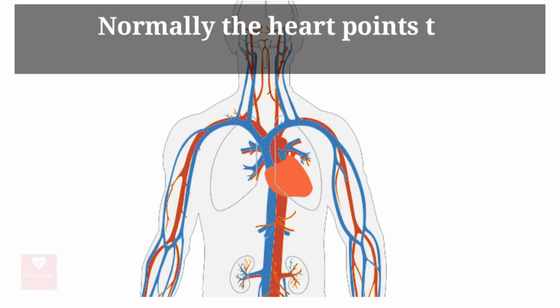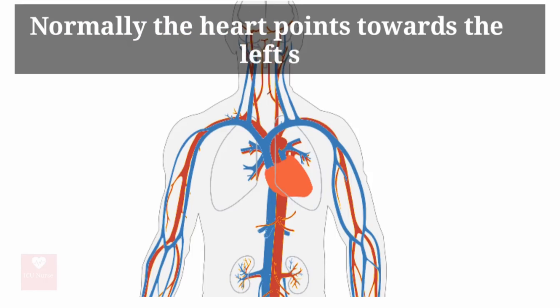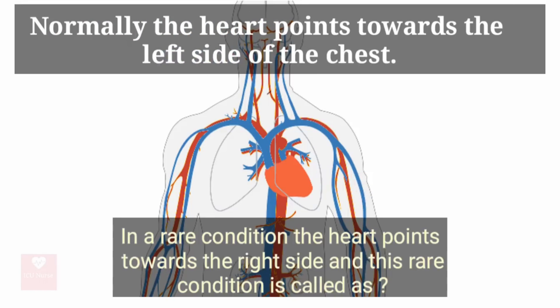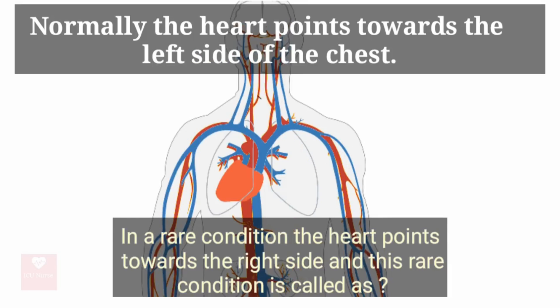Normally the heart points towards the left side of the chest, but in a rare condition the heart points towards the right side, and this rare condition is called dextrocardia.